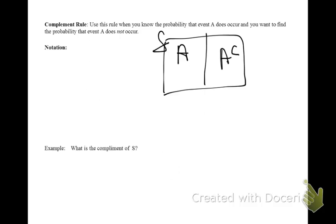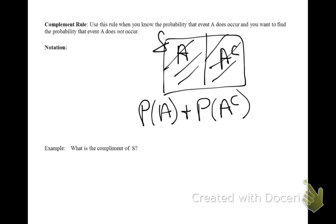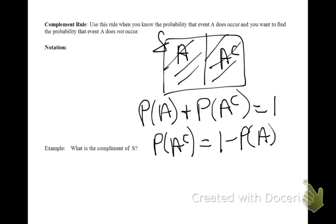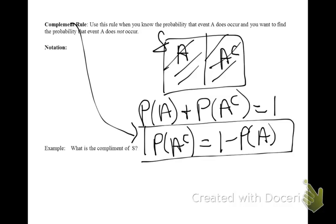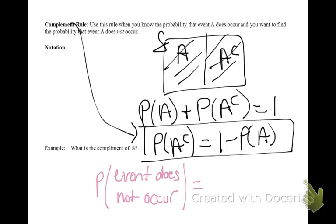Let's use this diagram to derive a formula. If we take the probability of A and add the probability of A complement, this composes the entire sample space, meaning it occurs with probability 1. Solving for the probability of A complement, you'll see that it's 1 minus the probability of A. This is the complement rule: the probability an event does not occur equals 1 minus the probability that the event does occur.